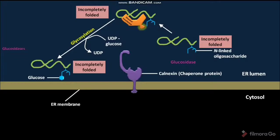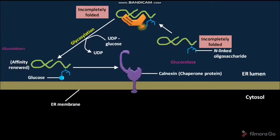Due to this added glucose molecule in the N-linked oligosaccharide of the incompletely folded protein, the protein's affinity towards calnexin is renewed. Due to this affinity renewal, the incompletely folded protein binds to calnexin, and as a result, the protein is retained in the ER lumen.